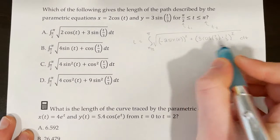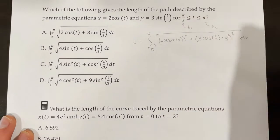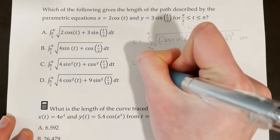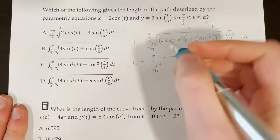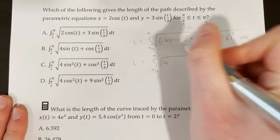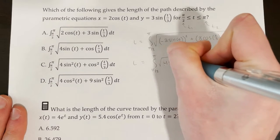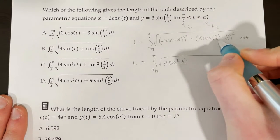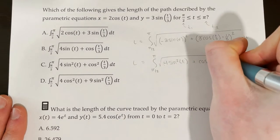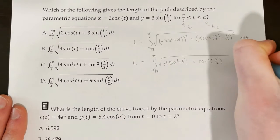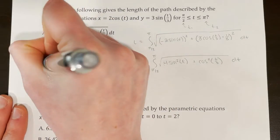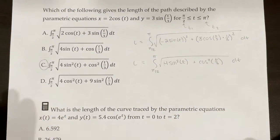The 3 and 1/3 cancel, leaving cos(t/3). Cleaning up: (−2)² = 4, giving 4sin²(t), and cos(t/3) squared gives cos²(t/3). So the integrand is √(4sin²(t) + cos²(t/3)) dt, integrated from π/2 to π. This matches answer choice C.